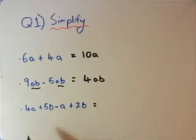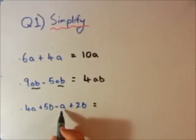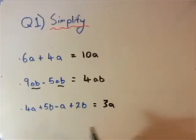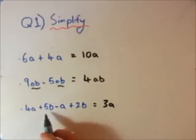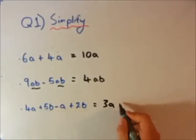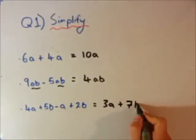Last one, you can only add or subtract like terms. So let's look at the a's first. Just having an a is like having a 1a. So that's 4 minus 1 is 3a. Now let's have a look at the b's, 5b plus 2b is 7b.